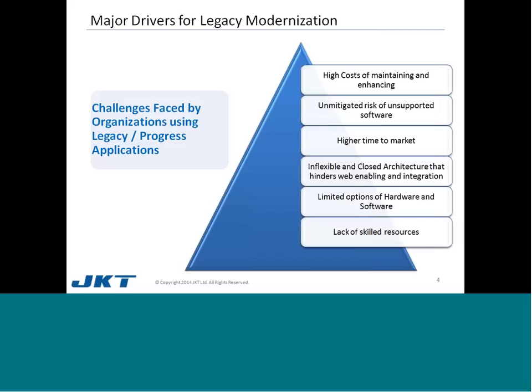Coming to the various drivers for modernization of the legacy Progress application, high cost of maintenance and enhancement is because of the closed architecture, and you need to do and redo many things to meet your customer demands. Running your application on an unsupported Progress version, which is below 9.1E of Progress, is like sitting on a ticking time bomb. When your application on such version is down due to any reason, you are unlikely to get support from Progress Software Corporation. This is a major risk for your business continuity. Any new enhancement module you want to deliver will take longer time because of the closed architecture of your application.